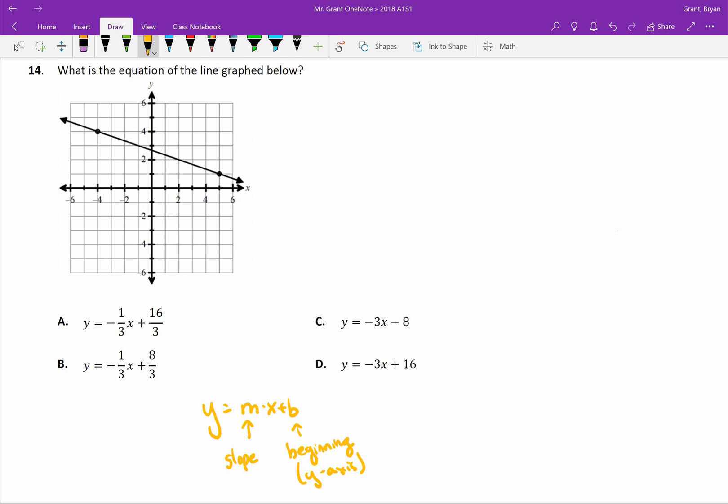Now just by process of elimination we can quickly eliminate most of these options. For example, notice looking on C, that our beginning is supposed to be at negative eight, but our graph definitely begins right here. So that's somewhere between two and three, so I know that this b value has to be between two and three. Negative eight is way down here, our graph does not start way down there, can't be C.